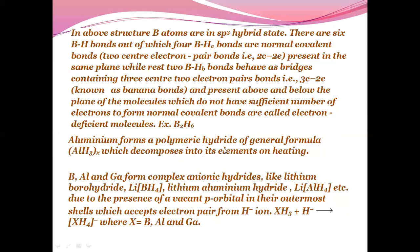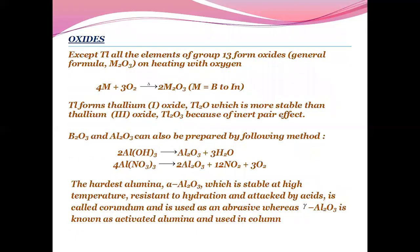Aluminium forms a polymeric hydride of general formula (AlH3)n. It decomposes into elements on heating. Boron, aluminium, and gallium form complex anionic hydrides like lithium boron hydride, lithium aluminium hydride, etc., due to the presence of vacant P orbitals in their outermost shells which accept electron pair from H- ions. So XH3 plus H- gives XH4- where X can be boron, aluminium or gallium.